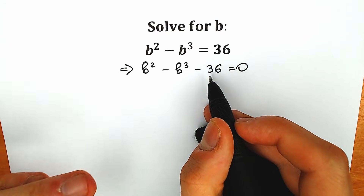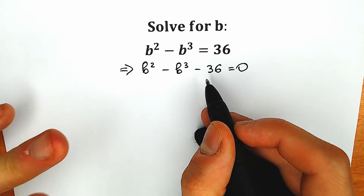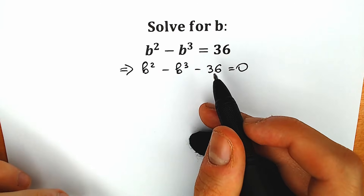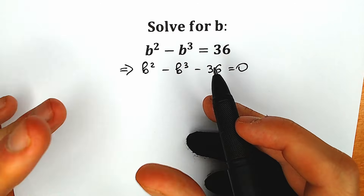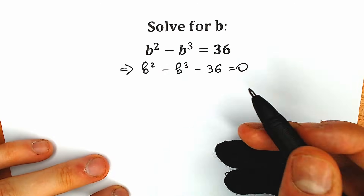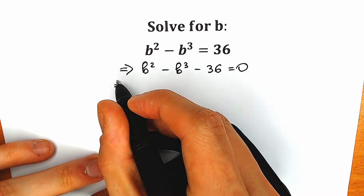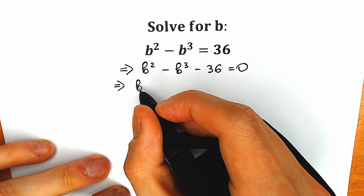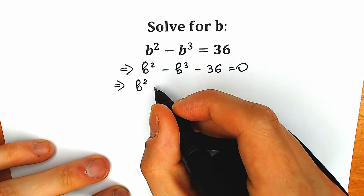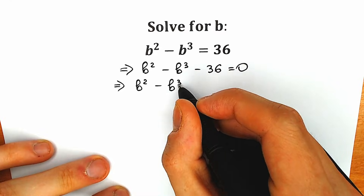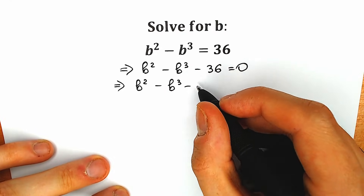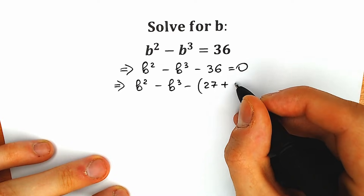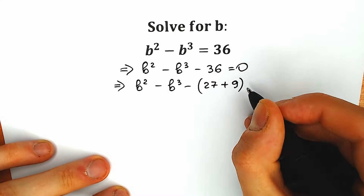Right now, instead of 36 — of course there are a lot of ways to express 36, for example 20 plus 16, or 27 plus 9 — the best way is 27 plus 9. A lot of students might ask why 27 plus 9 is the best way; just wait a few seconds. So we write b squared minus b cubed minus 27 plus 9, meaning 27 plus 9, equal to 0.